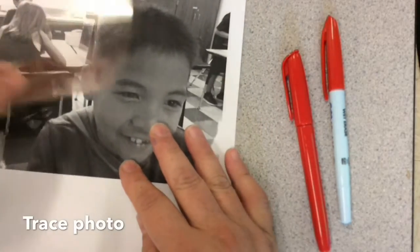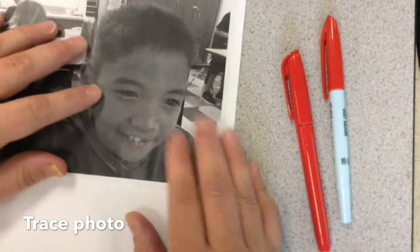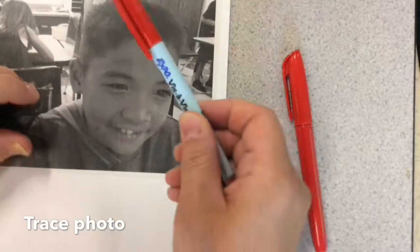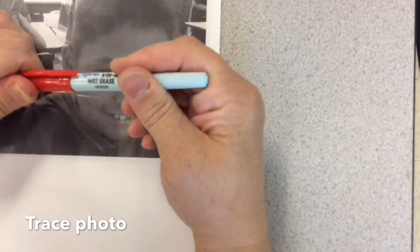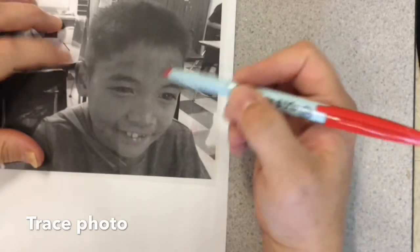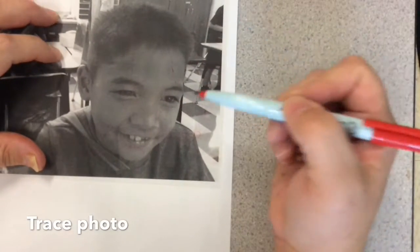You're going to take your, I have an overhead sheet here, clear sheet, and you're going to take a marker. These are wet erase markers. And I'm assigning you the color table that you're at. That's the color you're going to draw, because I want an even number of every color.